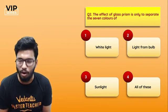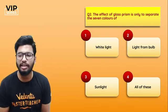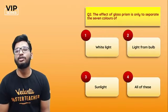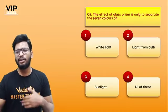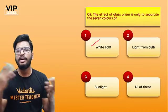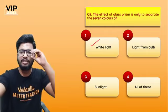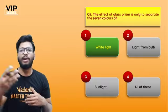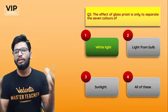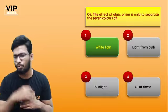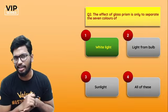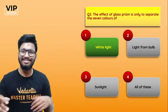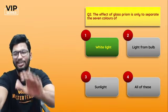Second question: the effect of a glass prism is only to separate the seven colors of what — white light, light from a bulb, or sunlight? We generally use white light. Sunlight could also be an answer, since white light is a combination of seven different colors. Sunlight is also nothing but white light itself, so white light is the right answer.